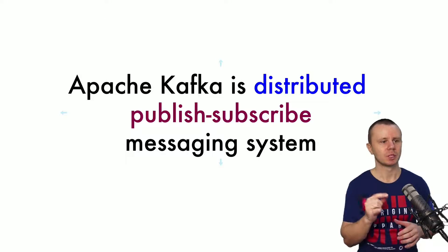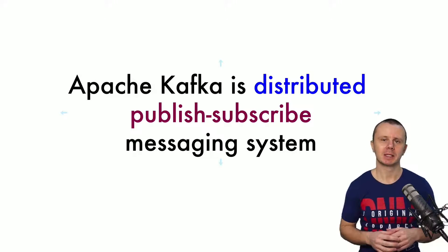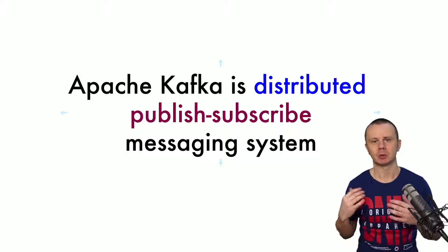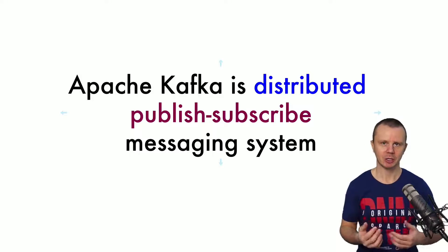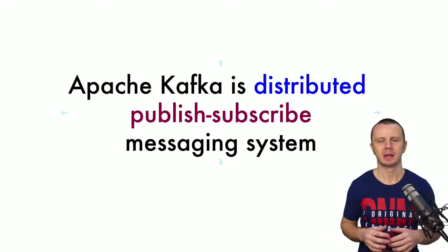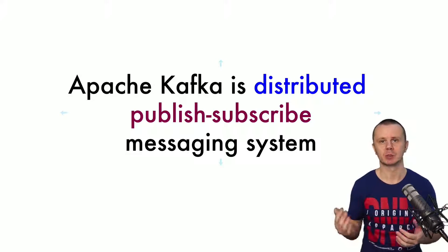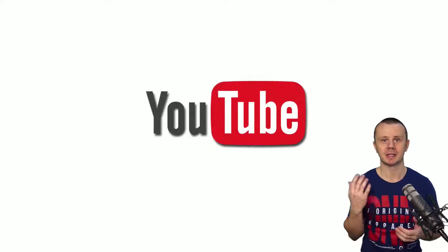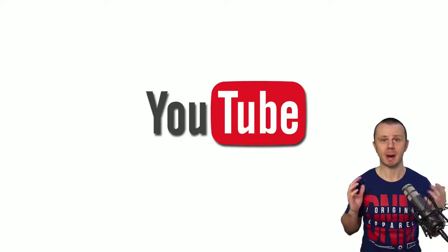I'll start with publish-subscribe. A publish-subscribe system means that there are publishers and there are subscribers. Publishers publish some information and subscribers subscribe to that information. You may be surprised, but YouTube is exactly such a system. At YouTube there are a lot of publishers — also called creators — that may create videos at any moment in time and publish them to the YouTube platform.